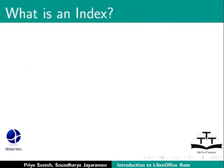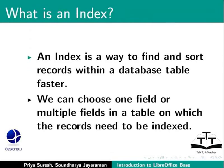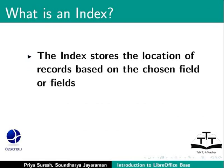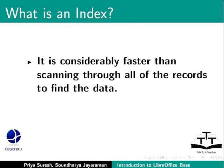What is an index? An index is a way to find and sort records within a database table faster. We can choose one field or multiple fields in a table on which the records need to be indexed. The index stores the location of records based on the chosen field or fields. So to retrieve data, Base can move to the location of the data directly by using the index, and so it is considerably faster than scanning through all of the records to find the data.